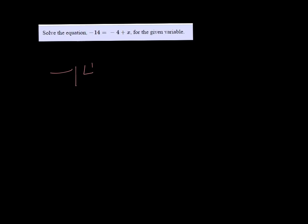We want to solve the equation negative 14 equals negative 4 plus x. I need to get x by itself, and the only thing that is getting in the way is this negative 4.